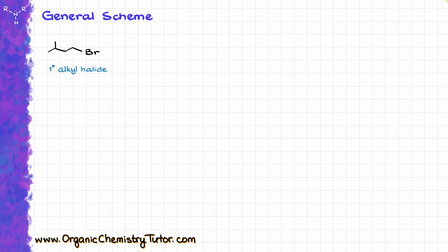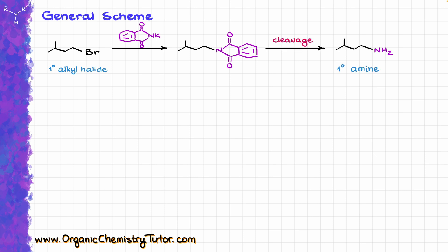The general scheme of the reaction is fairly simple. We are going to start with the primary alkyl halide, and we are going to treat it with the phthalamide, which is going to give us this intermediate, then we are going to take this intermediate and do the cleavage of that, releasing our primary amine. As simple as that.